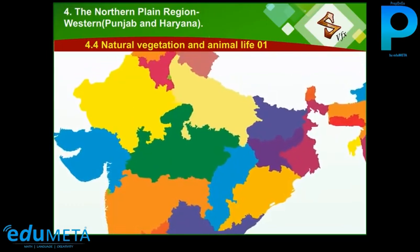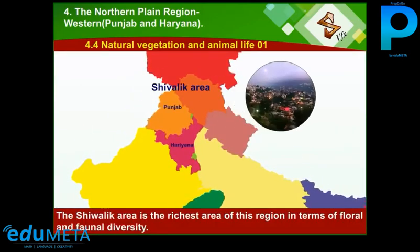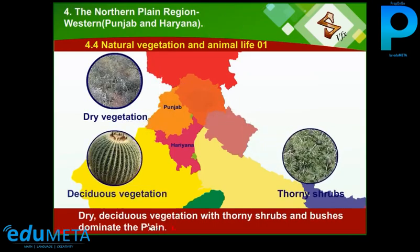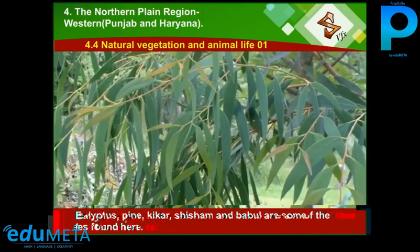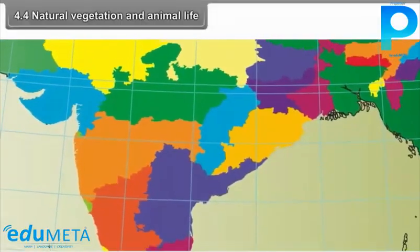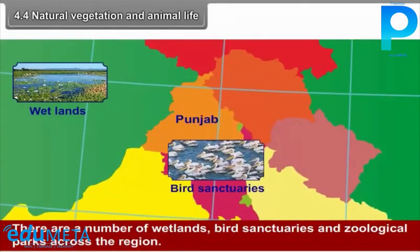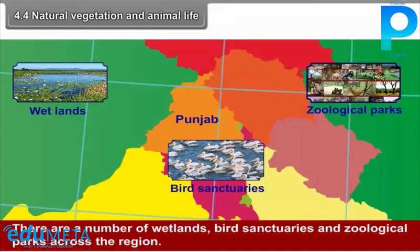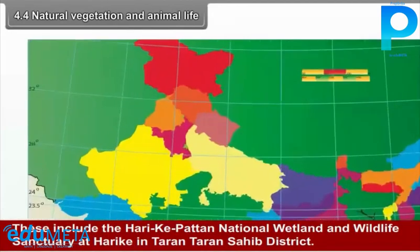4.4 Natural Vegetation and Animal Life. The Shivalik area is the richest area of this region in terms of floral and faunal diversity. Dry deciduous vegetation with thorny shrubs and bushes dominates the plain. Trees like Eucalyptus, Pine, and Kikar are found here. There are a number of wetlands, bird sanctuaries, and zoological parks across the region, including the Harike Pattan National Wetland and Wildlife Sanctuary at Harike in Tarn Taran Sahib District.